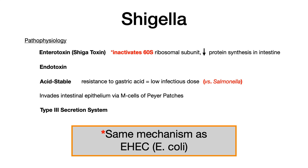Just like Salmonella, Shigella invades the intestinal epithelium via the M-cells of the Peyer's patches — that mechanism is identical. Also like Salmonella, Shigella has a Type 3 secretion system, which is a way for the bacteria to inject its toxin directly into a target cell.